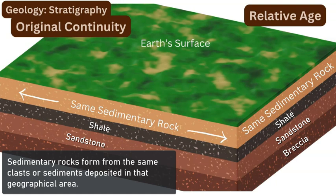The next principle is the principle of original continuity. It states that over a certain geographic area, when certain sediments or materials are deposited to form a sedimentary rock — whether mudstone, shale, limestone, conglomerate, or breccia — they had the same material, the same or similar grain size, and similar chemical composition over that given area. So that's the continuity of the actual material that's been laid down to form the rock.